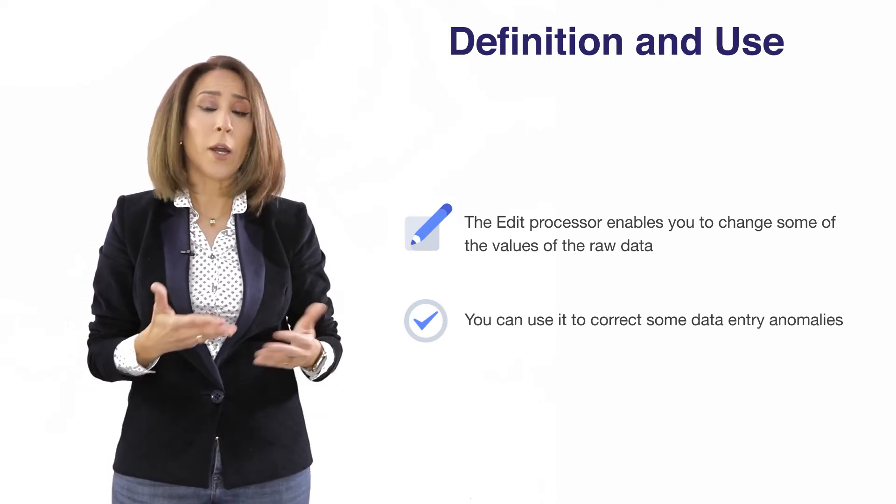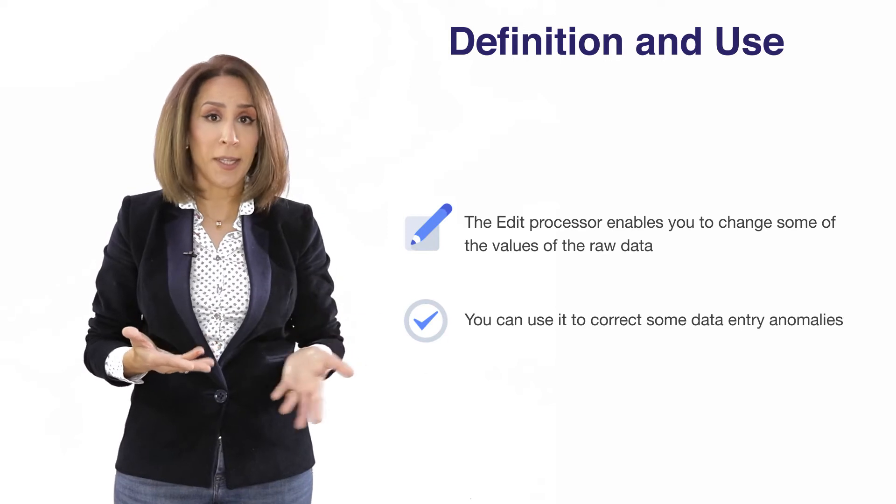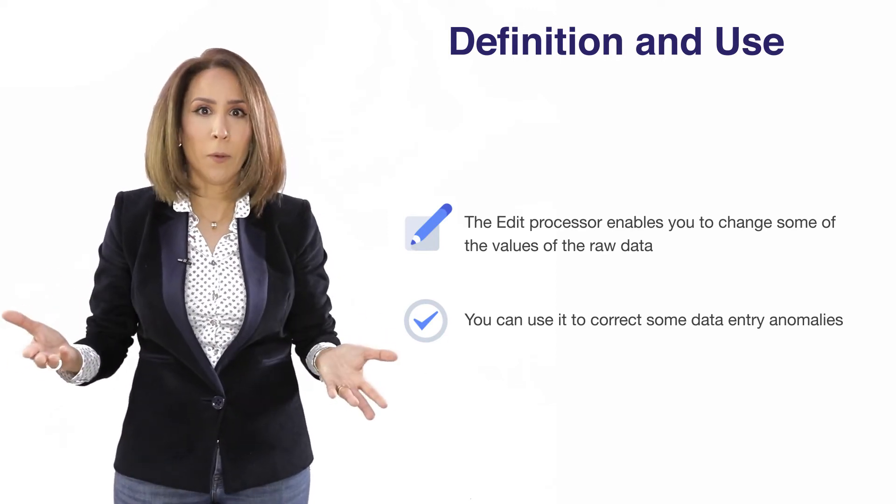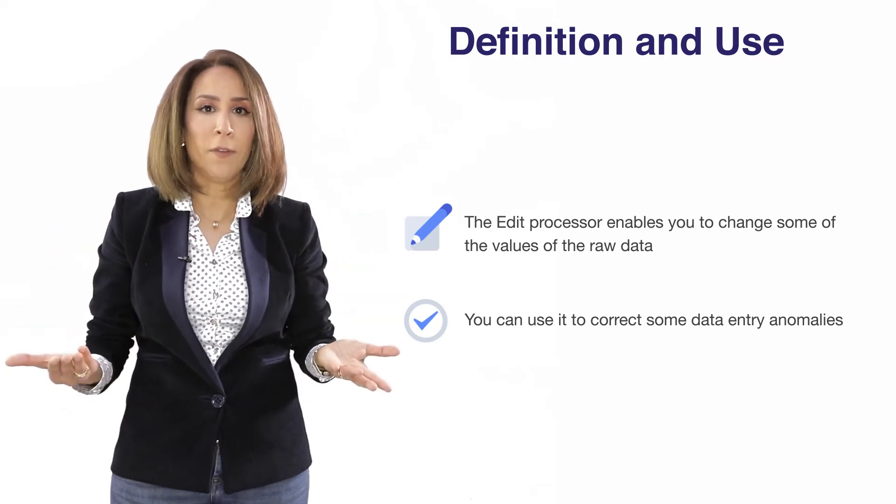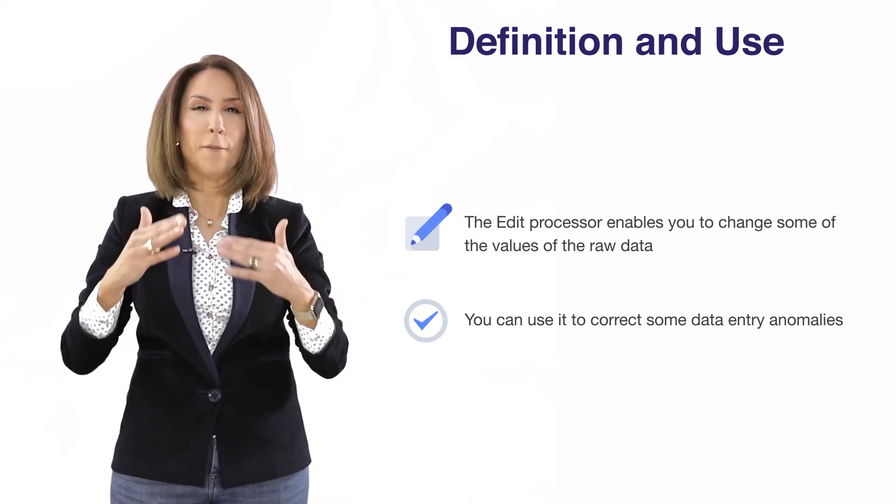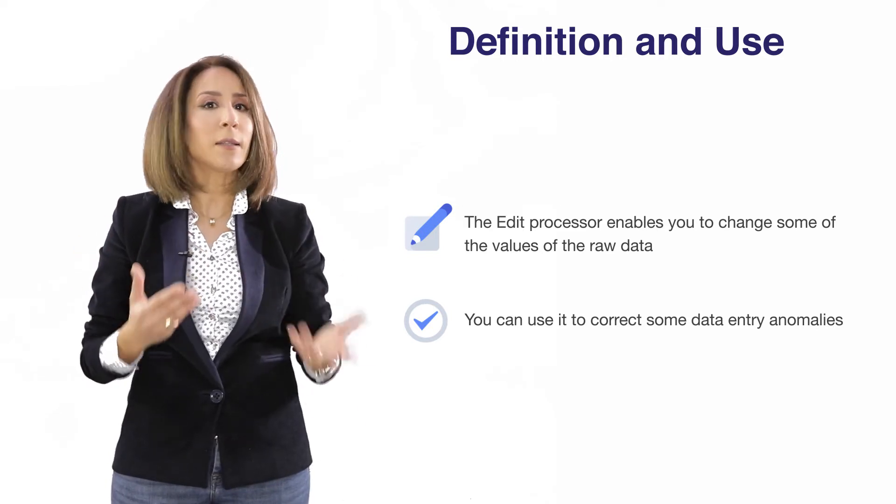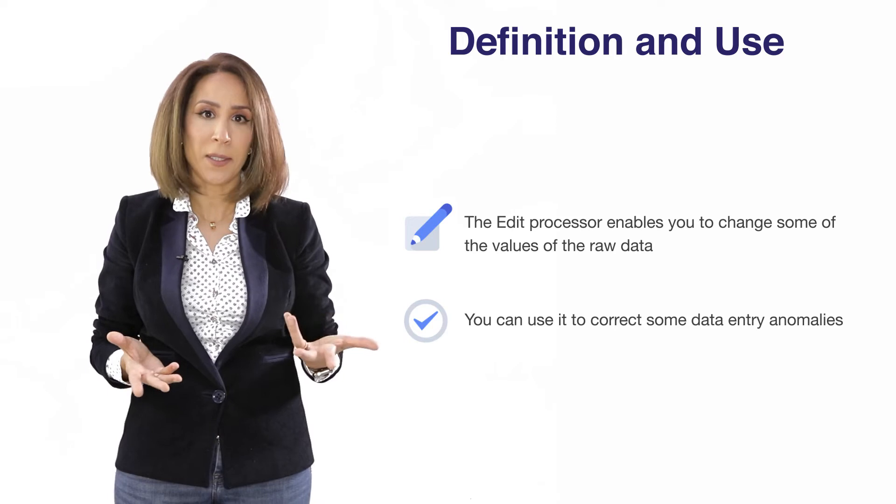For example, you are correcting a mistake in your initial data set or you have created a seasonal variable and when you graph that seasonal variable you may think that for specific periods we have very extreme values and we want to edit them. In that context, you will use the edit processor in order to change the values of those variables.